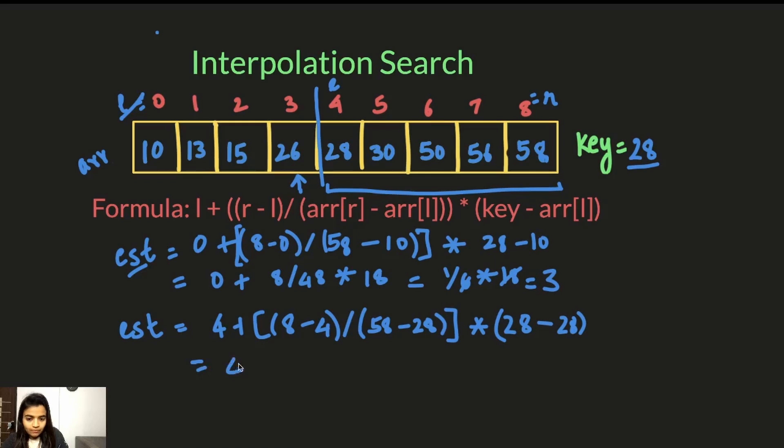So now we have 4 plus 8 minus 4 is 4 divided by 58 minus 28 is 30 into 28 minus 28 is 0. Anything into 0 is 0.